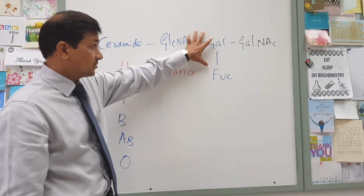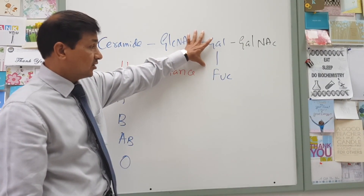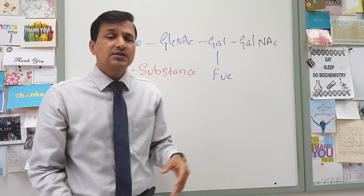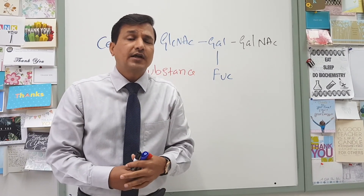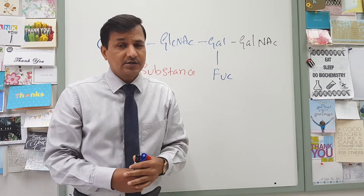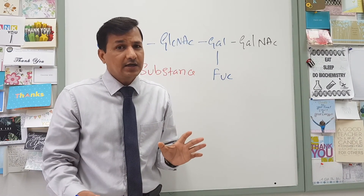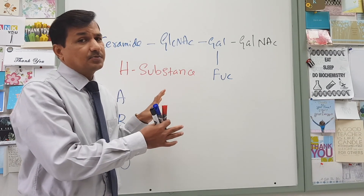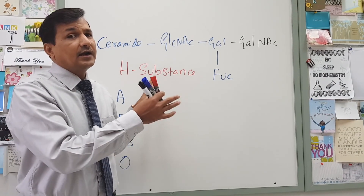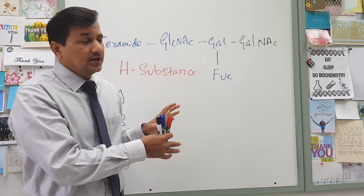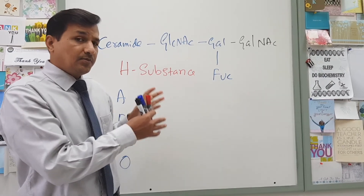Since type A antigen is present on all their red blood cells, that means they don't have anti-A antibody. But these people will have anti-B antibody in their plasma.